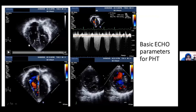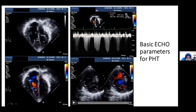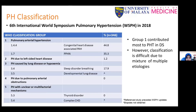Echocardiographic findings show enlarged right-sided heart chambers with high TRJ and flattening of the interventricular septum. The World Symposium on Pulmonary Hypertension in 2018 classified pulmonary hypertension into five major groups: Group 1 — pulmonary arterial hypertension (e.g., congenital heart disease, PPHN); Group 2 — due to left-sided heart disease; Group 3 — due to lung disease or hypoxemia (e.g., sleep breathing disorder, developmental lung disease); Group 4 — due to pulmonary arterial obstruction; Group 5 — unclear mechanism.